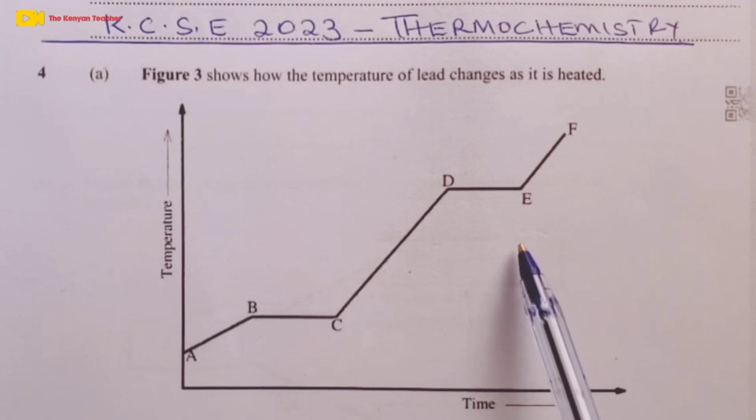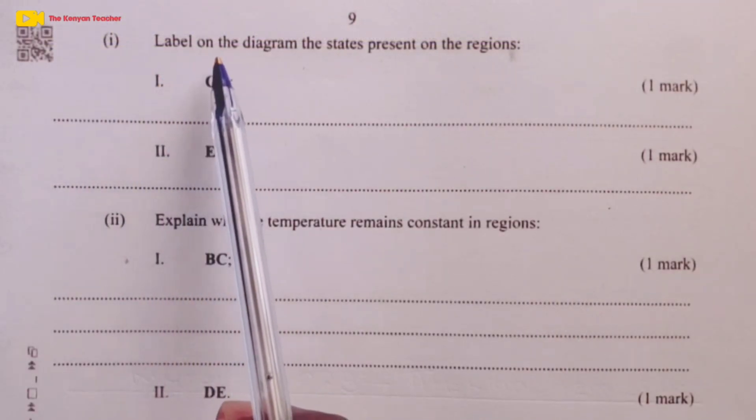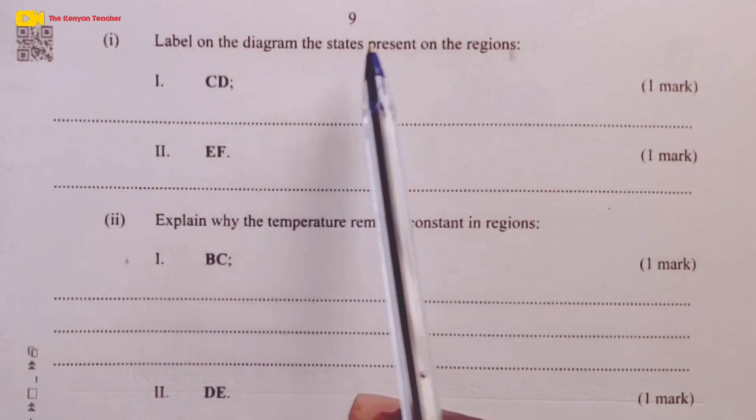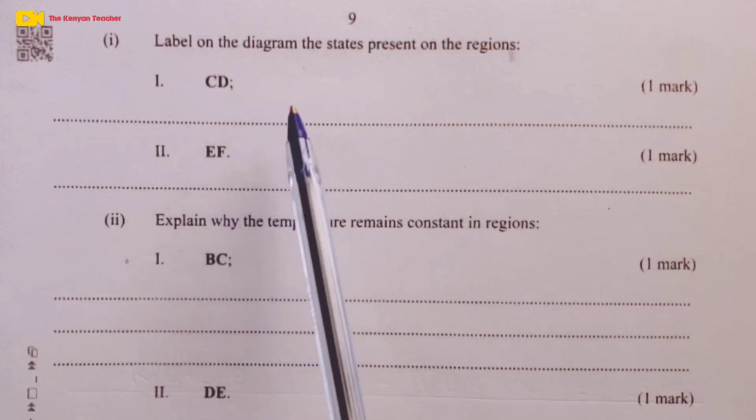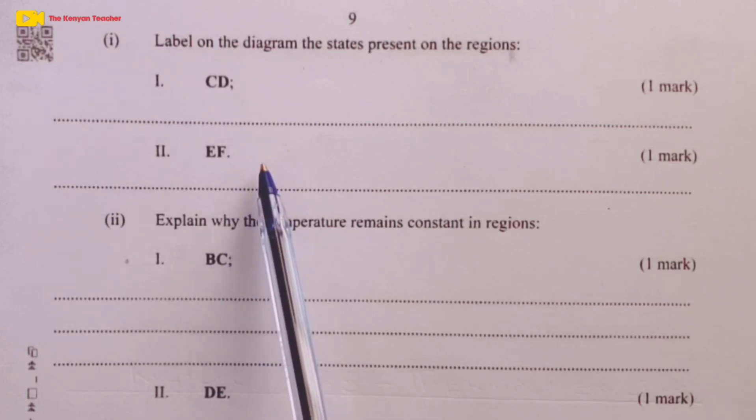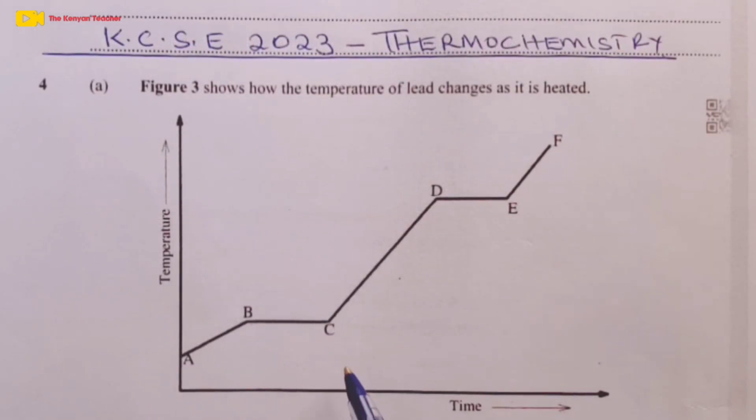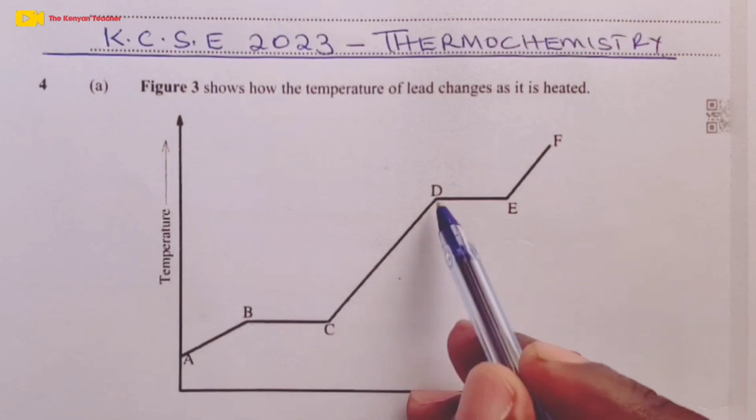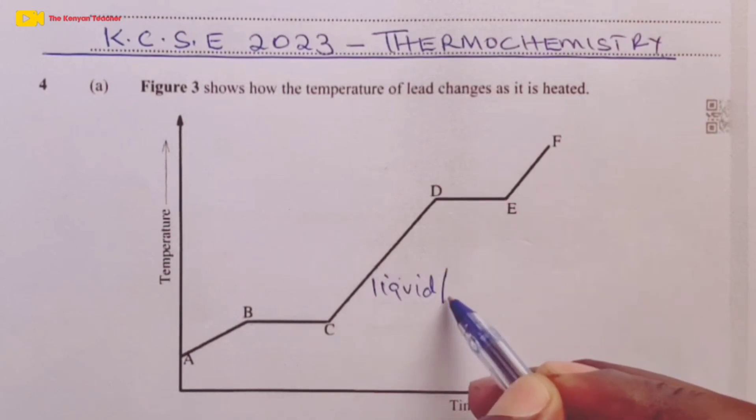Part A, Roman 1, we were asked to label on the diagram the states present on regions CD and EF for one mark each. As agreed in our previous discussion, the state of lead between region C, D we agreed is liquid. A candidate would go for molten state as well. This for one mark.